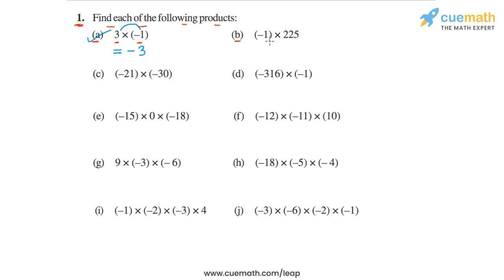In part B, we have the product minus 1 into 225. So the magnitude of the product will be 1 into 225, or 225. And the sign of the product will be negative, since the first integer is negative and the second is positive. So the product will be minus 225.